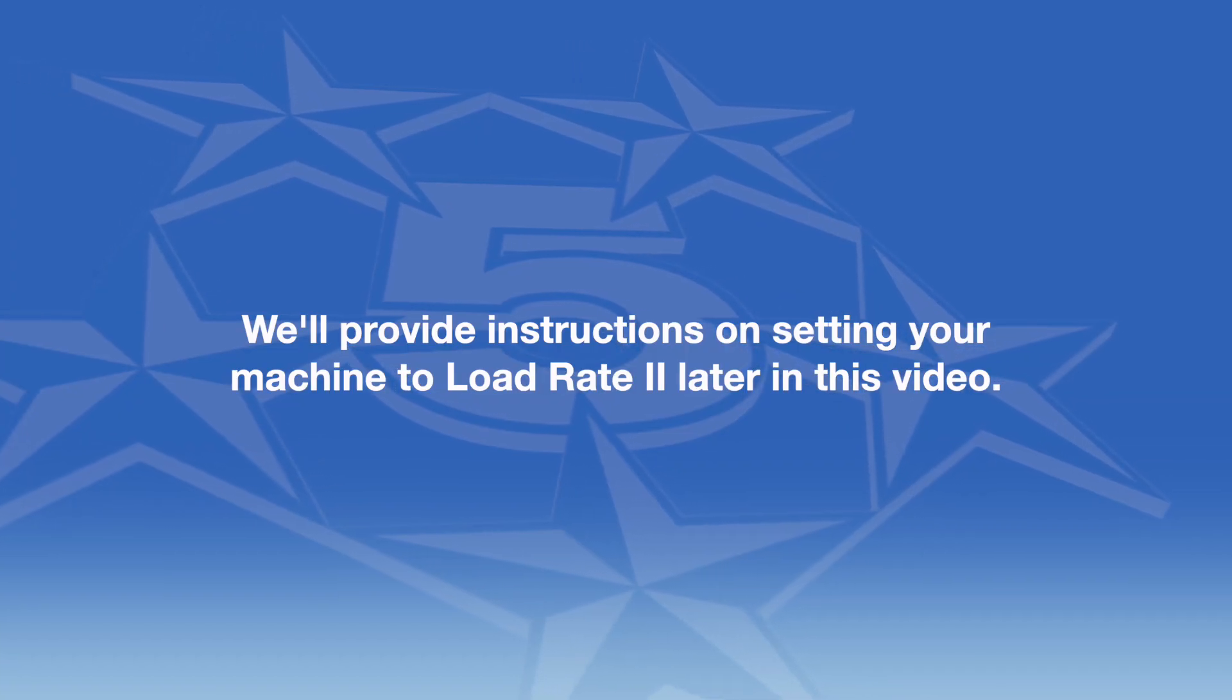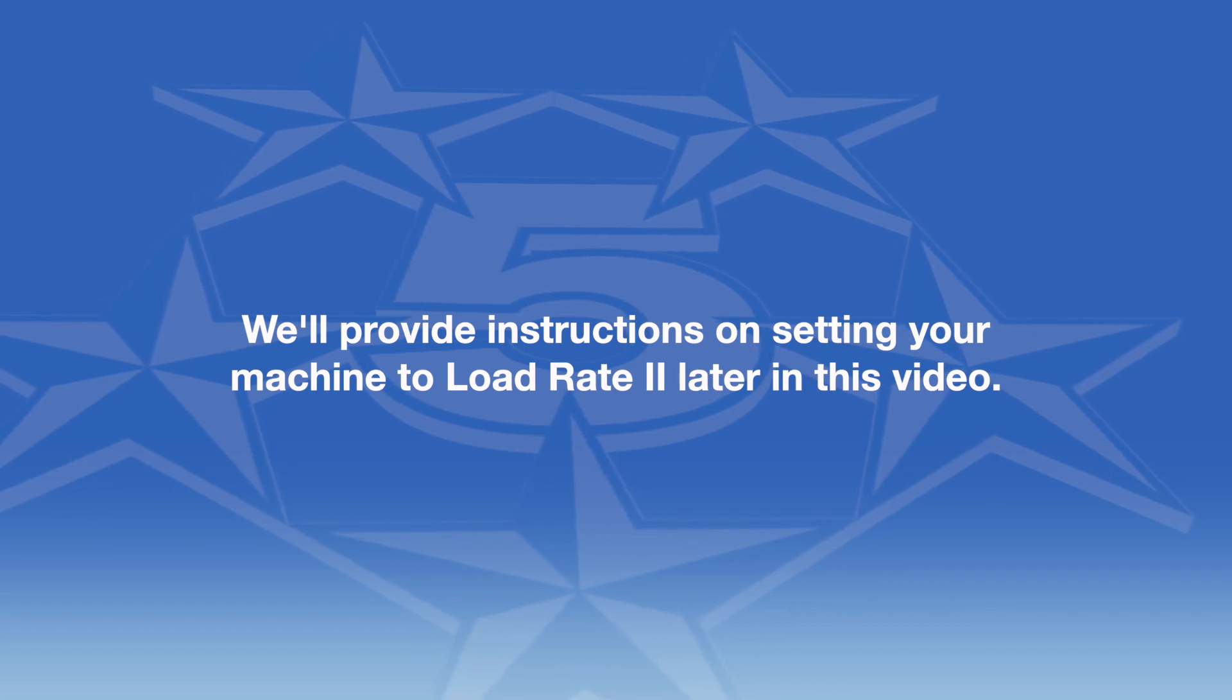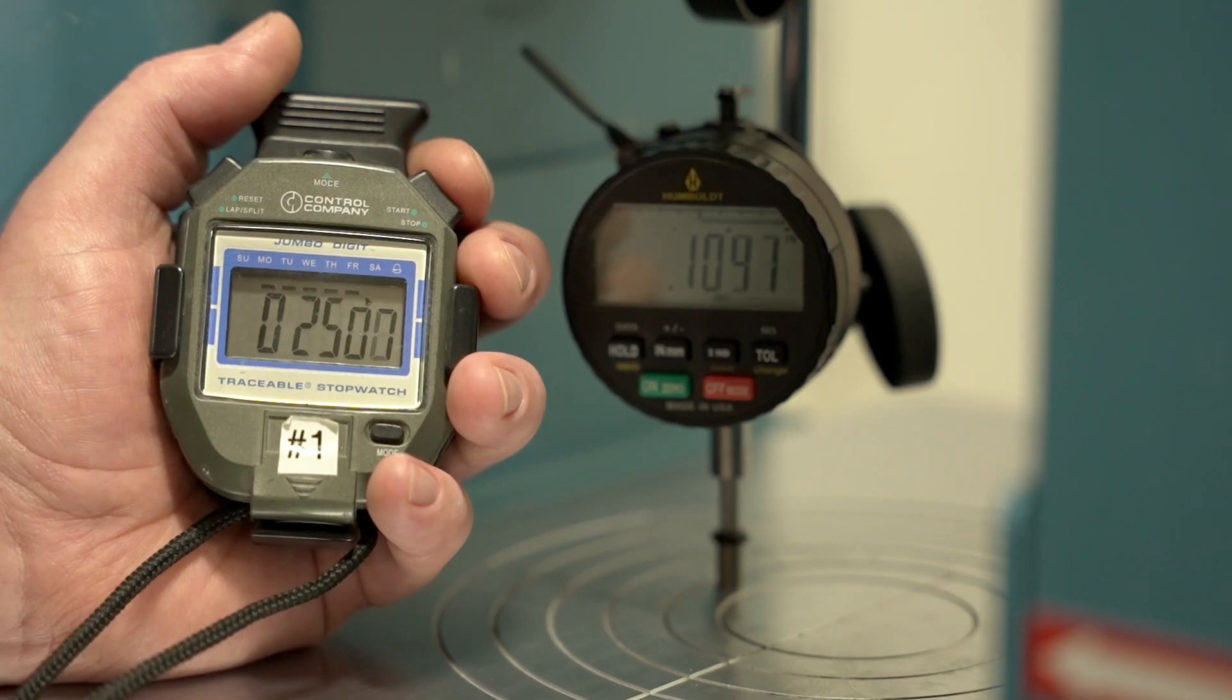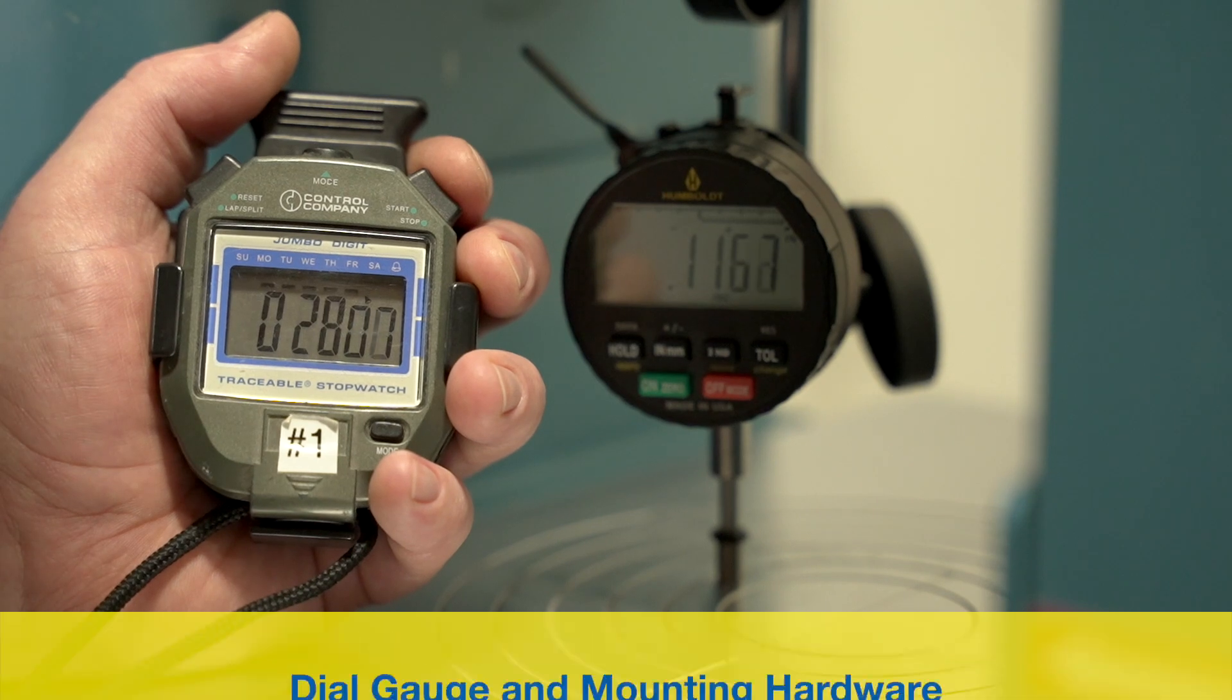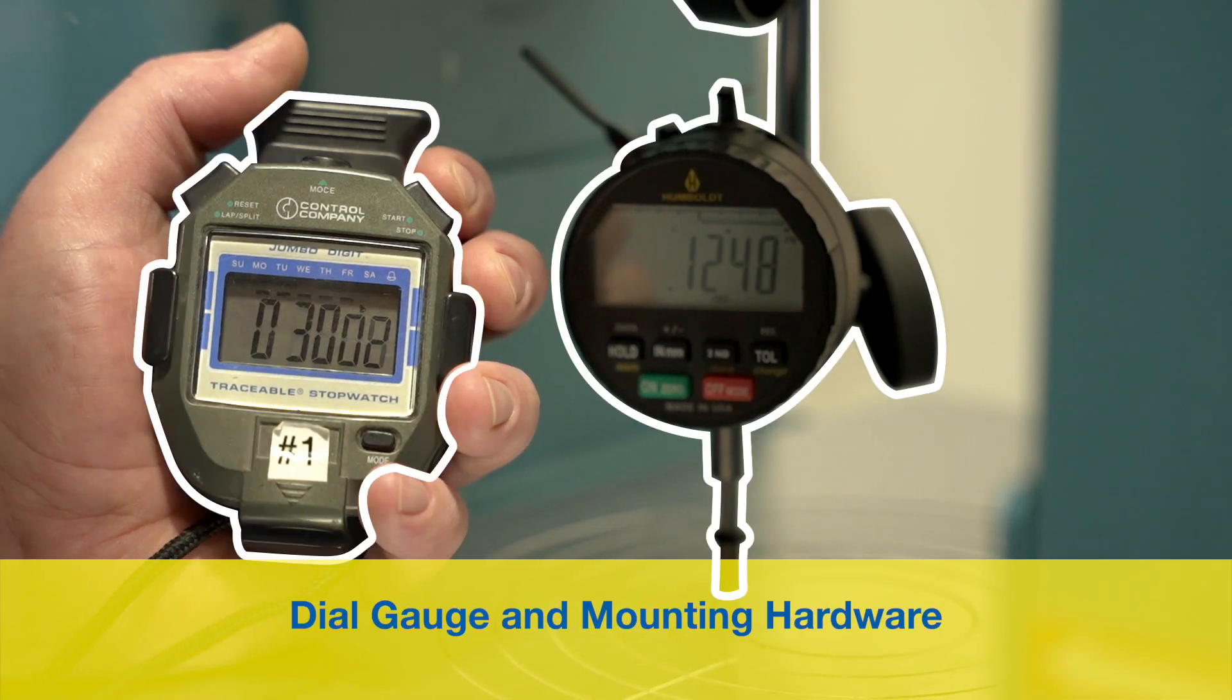We'll provide instructions on setting your machine to load rate 2 later in this video. If you plan to manually set your compressive testing machine to load rate 2, you'll need a dial gauge, mounting hardware, and a stopwatch.